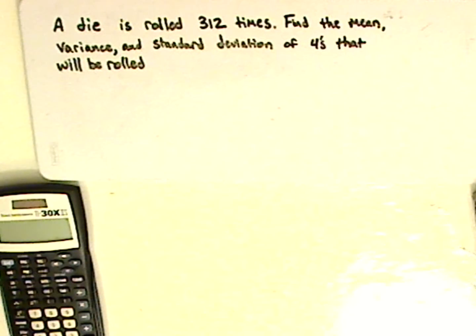So let me first read the problem. A die is rolled 312 times. Find the mean, variance, and standard deviation of 4s that will be rolled.